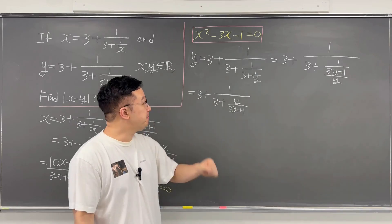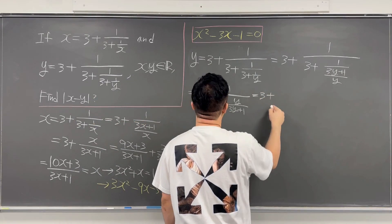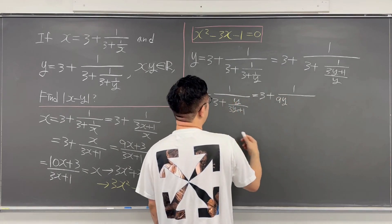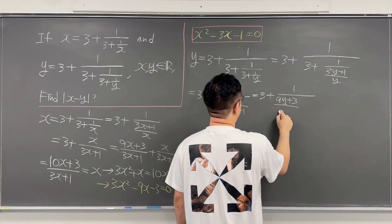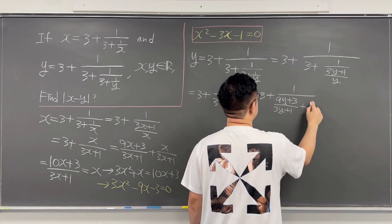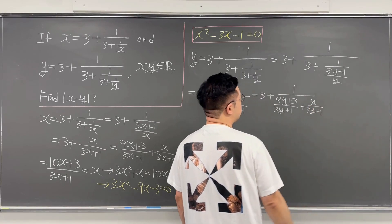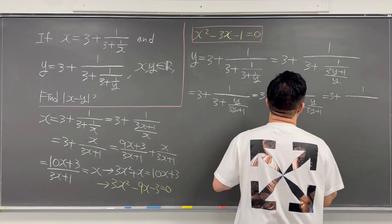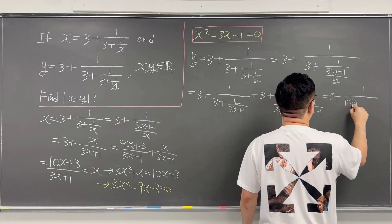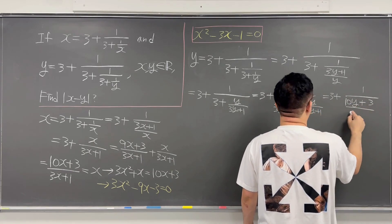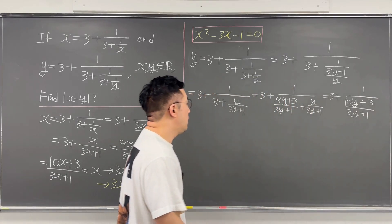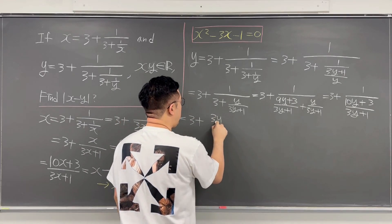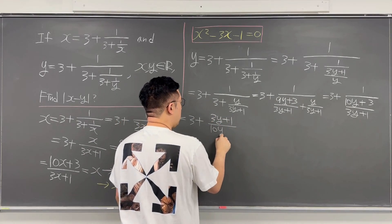We can combine those two terms in the denominator, so this is now 3 plus 1 over: 3 becomes 9y plus 3 over 3y plus 1, and then plus y over 3y plus 1. Adding those gives 3 plus 1 over 10y plus 3 over 3y plus 1, which we can write as 3 plus 3y plus 1 over 10y plus 3.